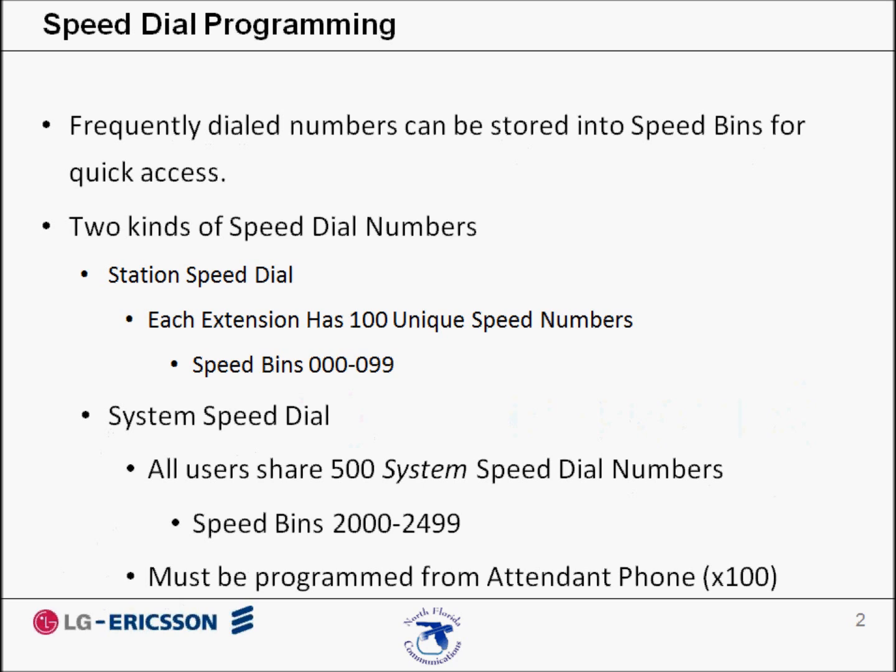You can change these numbers on your own phone without affecting your coworkers' speed dial numbers. System speed dial numbers are numbers that are shared by the entire system. There are 500 system speed bins and they are located in bins 2000 to 2499. These numbers are programmed just like station speed dial numbers except they must be programmed at station 100.